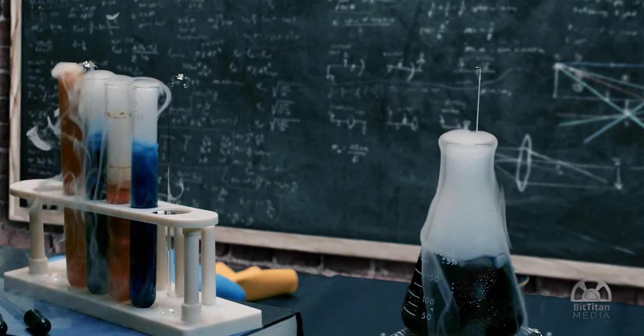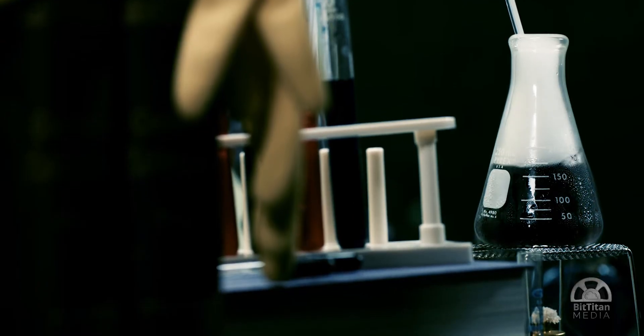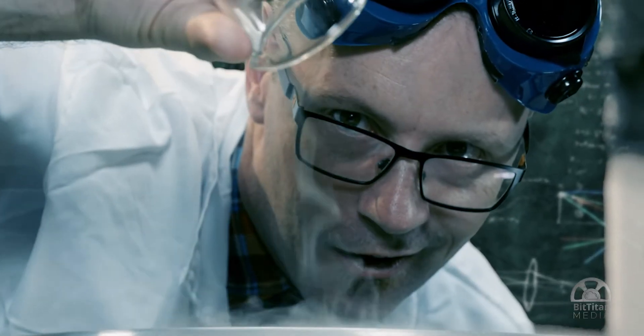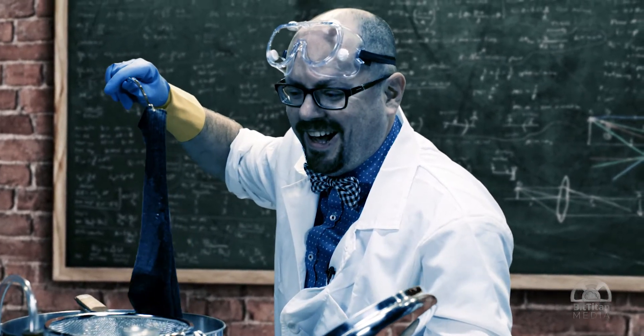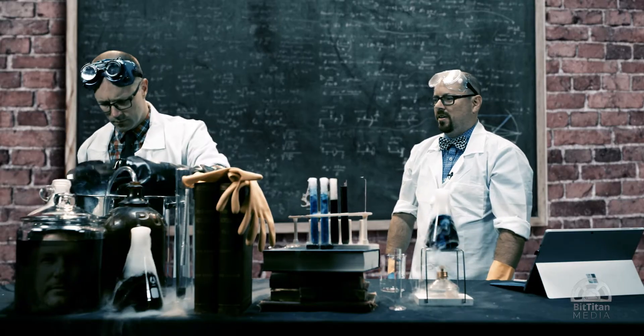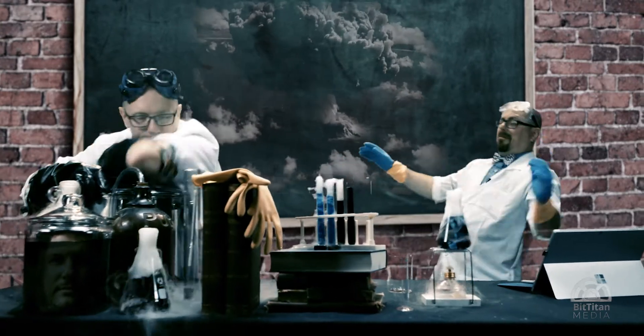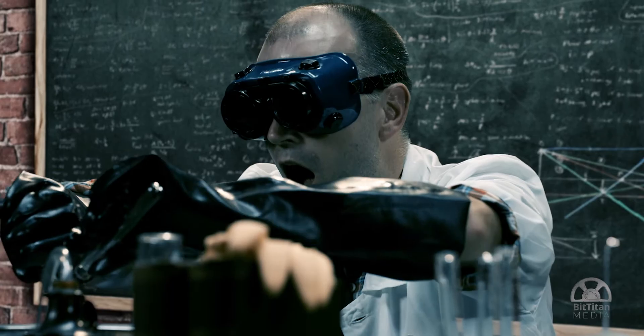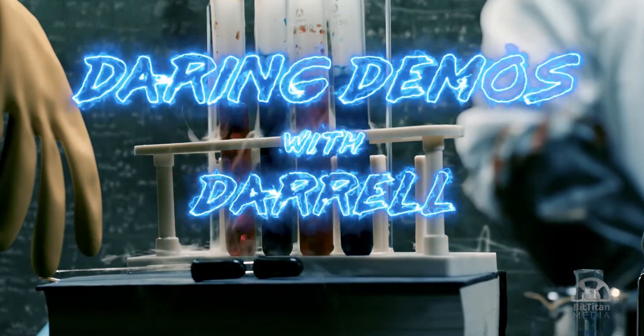When BitTitan puts out a product, it calls on two individuals to demonstrate those products to the world. Daryl Jekyll Webster, Super Genius, and Jethro Brainiac Seeger's Evil Mastermind. When they aren't pushing the envelope of String Theory or searching for the Higgs boson, they demonstrate the high power BitTitan product line in Daring Demos with Daryl and Jethro.